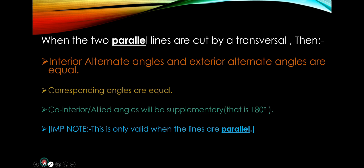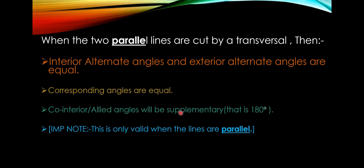Now let's look at parallel lines. When two parallel lines are cut by a transversal: interior alternate angles are equal, exterior alternate angles are equal, corresponding angles are equal, and co-interior or allied angles are supplementary — that is, their sum is 180 degrees. Important note: this is only valid when the lines are parallel.